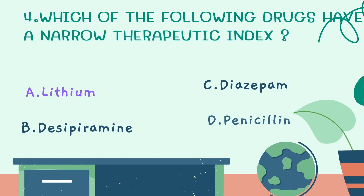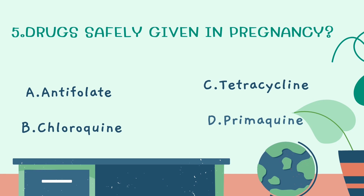Fifth question: which drug is safely given in pregnancy? Option A: Antifolate. Option B: Chloroquine. Option C: Tetracycline. Option D: Primaquine. The correct answer is Chloroquine. Antifolates are avoided because pregnancy increases folic acid requirements. Tetracycline causes teratogenic effects including bone defects and teeth discoloration. Primaquine can cause hemolysis due to G6PD deficiency. Therefore, Chloroquine is the safe antimalarial in pregnancy.